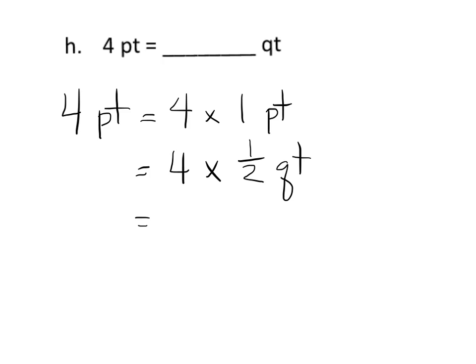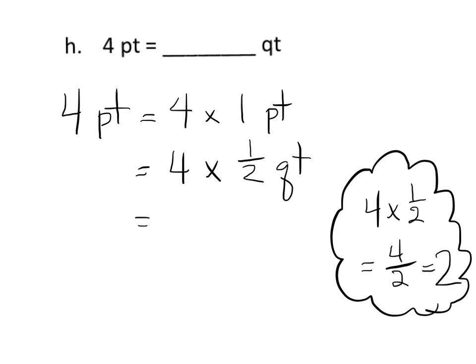So now four times a half. So over here on scratch paper, four times a half, that's going to be equal to four over two, which is equal to two. So teachers, you may need to take a moment and refresh your students on why all this is. So the answer is two quarts, because four times a half is two quarts.